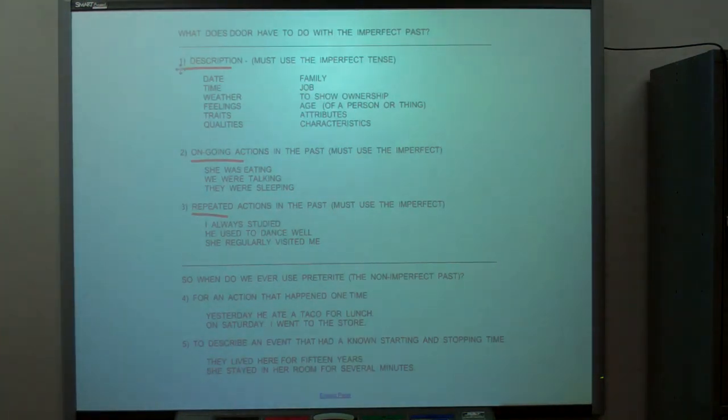Ongoing actions. Any time it's past tense ING, we were sleeping, they were running, he was eating, it's imperfect. And any time something happened over and over and over, Mr. Holt always told stupid jokes, that would be imperfect.